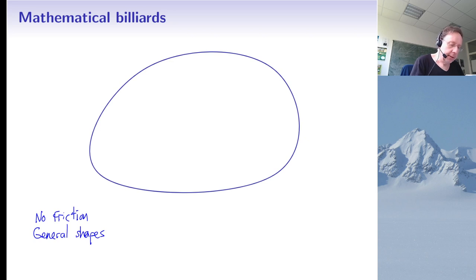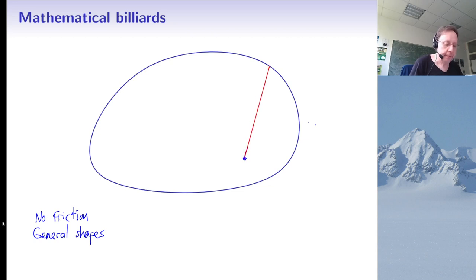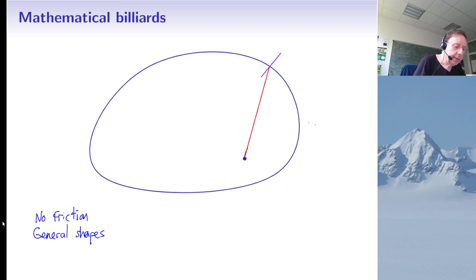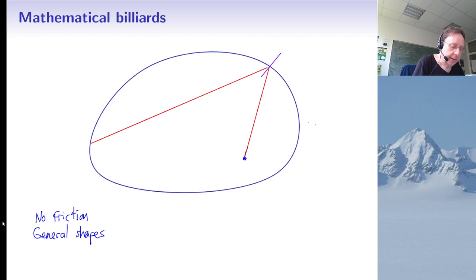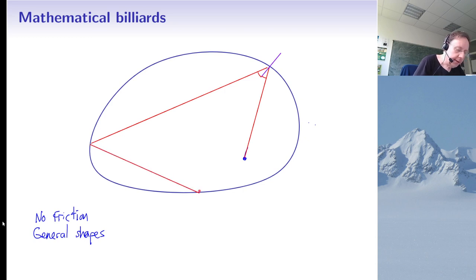I start somewhere in the billiard at some point and go in some direction, so I have a particle or a ray of light moving in a straight line. I follow this straight line until I hit the boundary, and then I make a reflection: if this is the normal vector, the angle of incidence equals the angle of reflection. I keep doing this, making another reflection here, and then another one, and so forth.